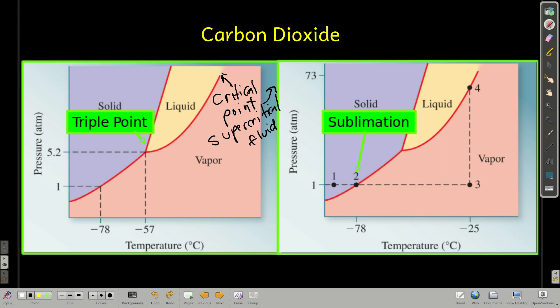So the pressure right at this point here is called the critical pressure, the temperature is called the critical temperature, and that point is called the critical point. This is called the triple point.